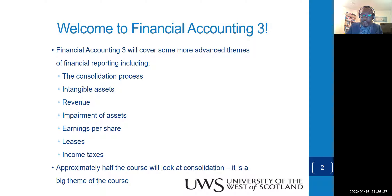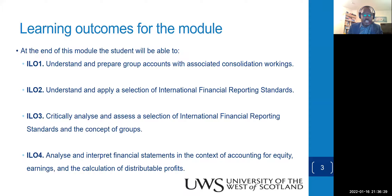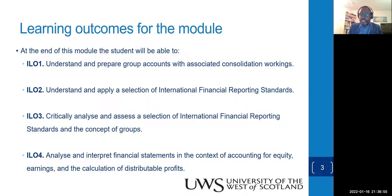Consolidation will take about half of the module. There are four module learning outcomes: understand and prepare group accounts with associated consolidation workings; apply selected IFRS standards; critically appraise a selection of IFRS standards and concepts of groups; and interpret and analyze financial statements in the context of equity earnings and calculation of distributable profits.